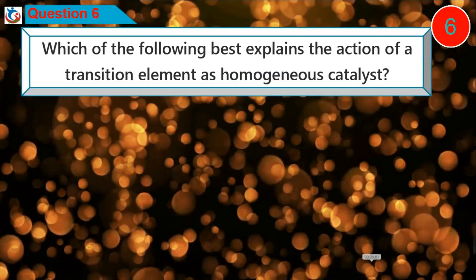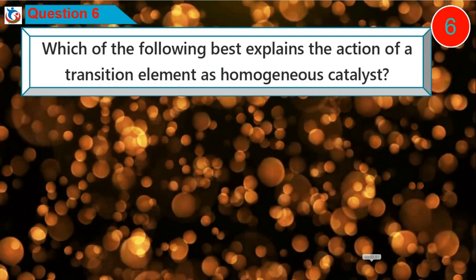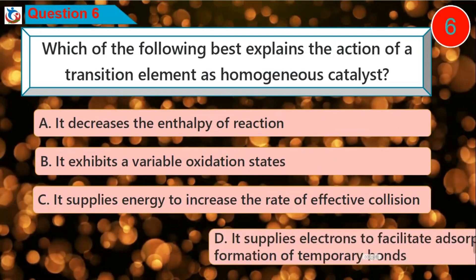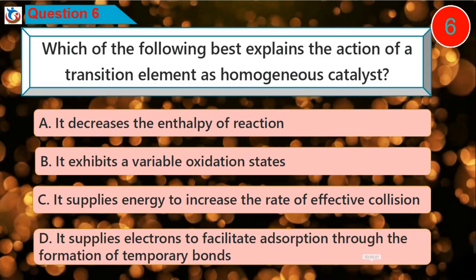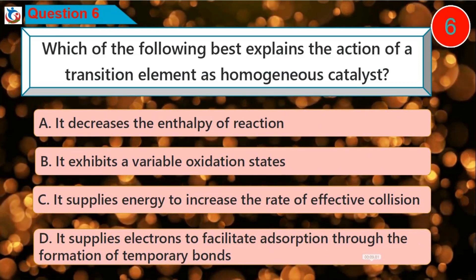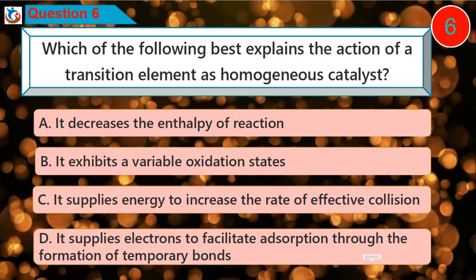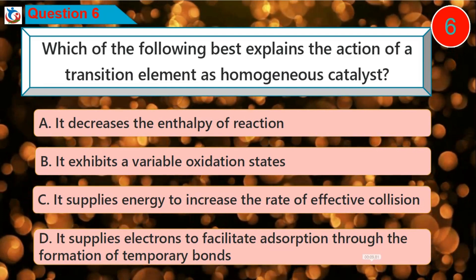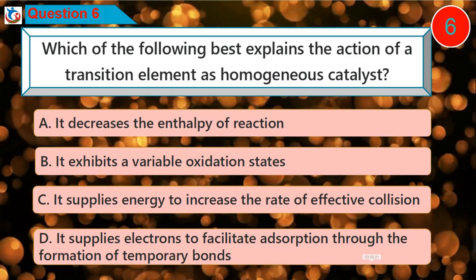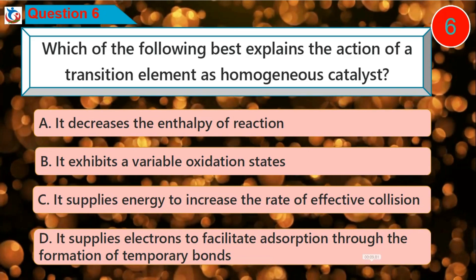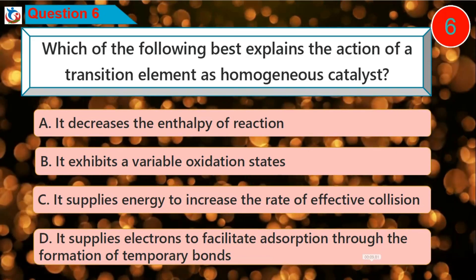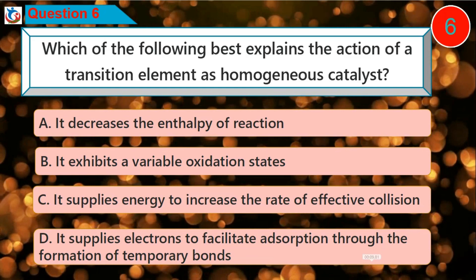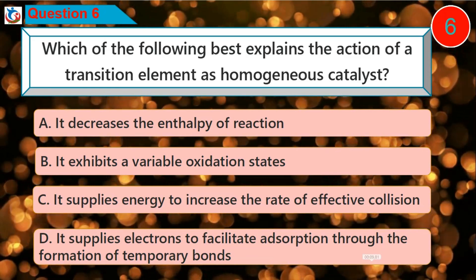Question 6: Which of the following best explains the action of a transition element as a homogeneous catalyst? A. It decreases the enthalpy of reaction. B. It exhibits a variable oxidation state. C. It supplies energy to increase the rate of effective collision. D. It supplies electrons to facilitate adsorption through the formation of temporary bonds.